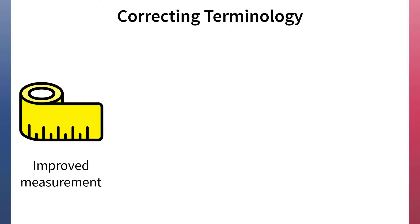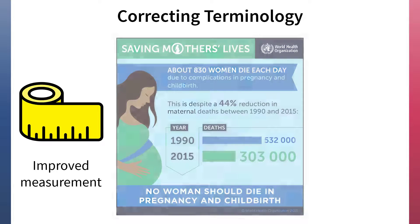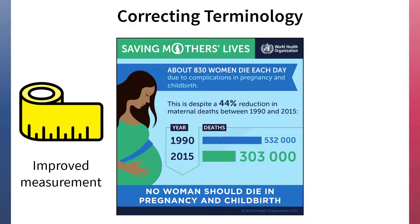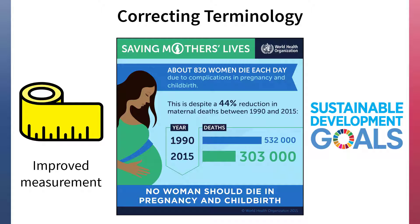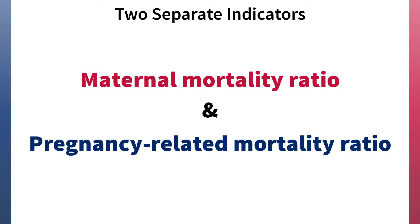Since then, as measurement has improved, the global number of maternal deaths has declined, and we have entered the era of sustainable development goals. The distinction between pregnancy-related and maternal deaths has become more meaningful, so DHS will now present two separate indicators: the maternal mortality ratio and the pregnancy-related mortality ratio.